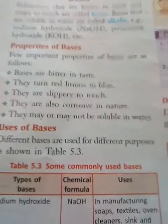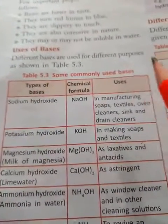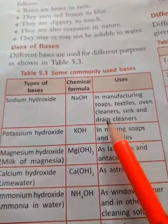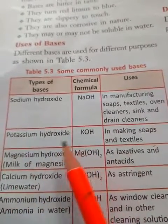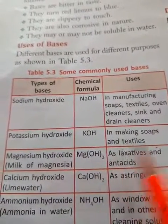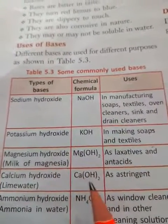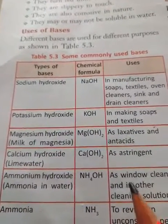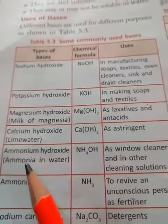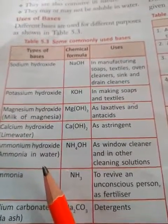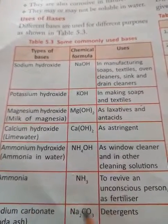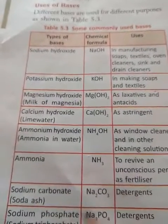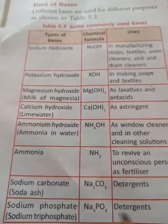Uses of bases: sodium hydroxide is used in manufacturing soaps, textiles, and oven cleaners. Potassium hydroxide is used in making soaps and textiles. Magnesium hydroxide, known as milk of magnesia, is used as an antacid. Calcium hydroxide is used as an astringent and in lime water. Ammonium hydroxide is used as a cleaning solution, to revive an unconscious person, and as a fertilizer. Sodium carbonate and sodium phosphate are used as detergents.